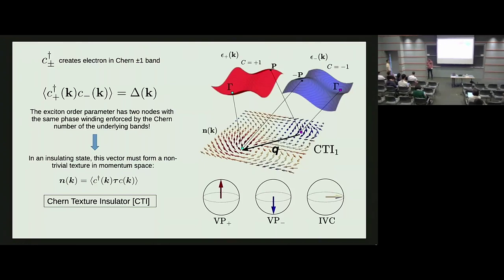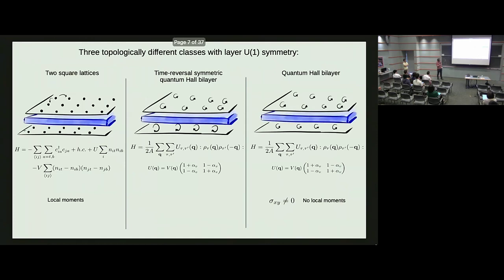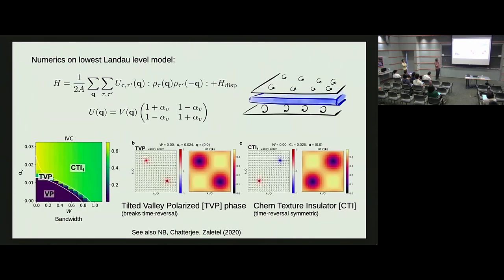Q: In the two time-reversal-symmetric copies of the lowest Landau level, another possible state is two time-reversal copies of a composite Fermi liquid. Do you have insight into the energetic competition? A: That's a very interesting question, because the competition between composite Fermi liquids and the exciton state has recently been studied in the conventional quantum Hall bilayer. In our model, there must be a phase transition somewhere—at some point along the anisotropy axis you have to go to composite Fermi liquid. I won't make definitive statements, but you clearly have to go beyond Hartree-Fock to understand what's happening there.